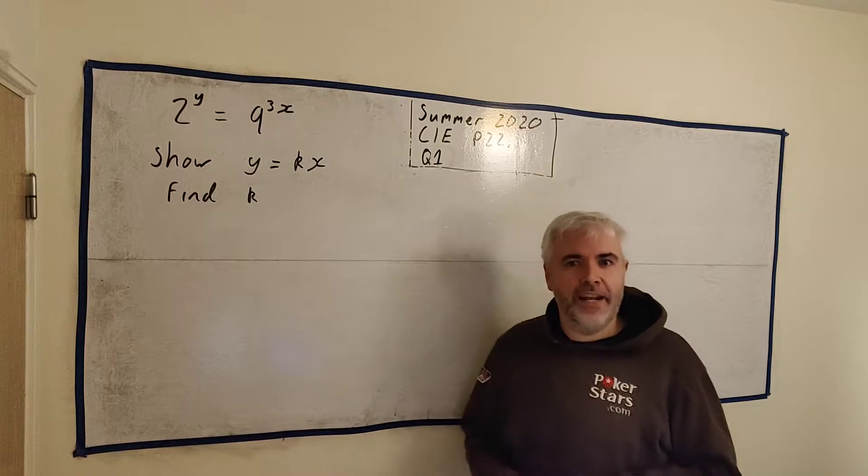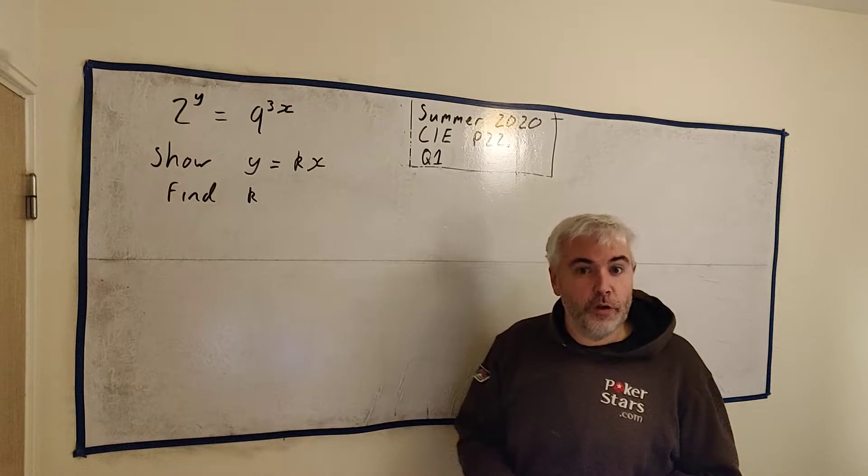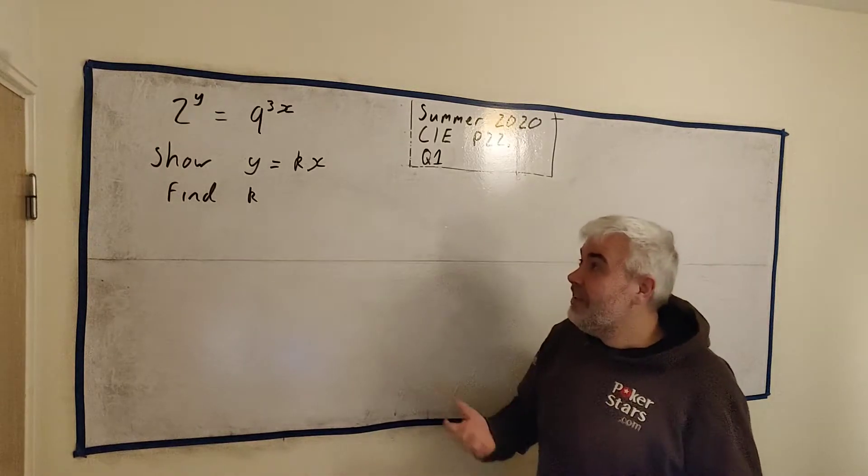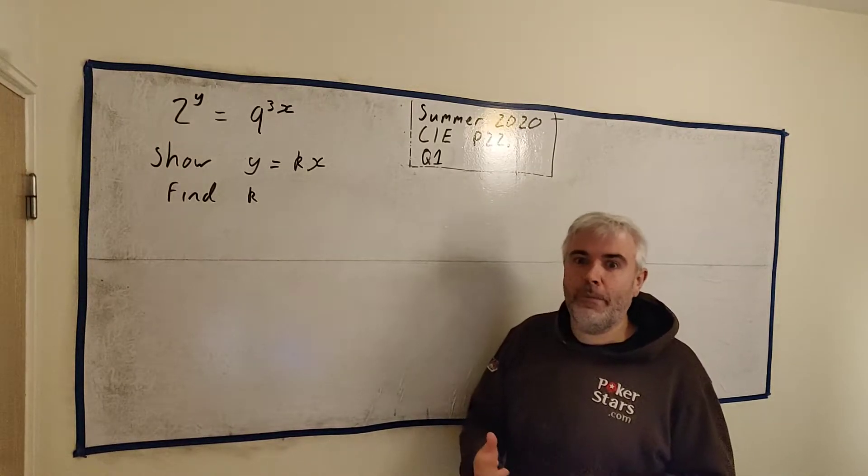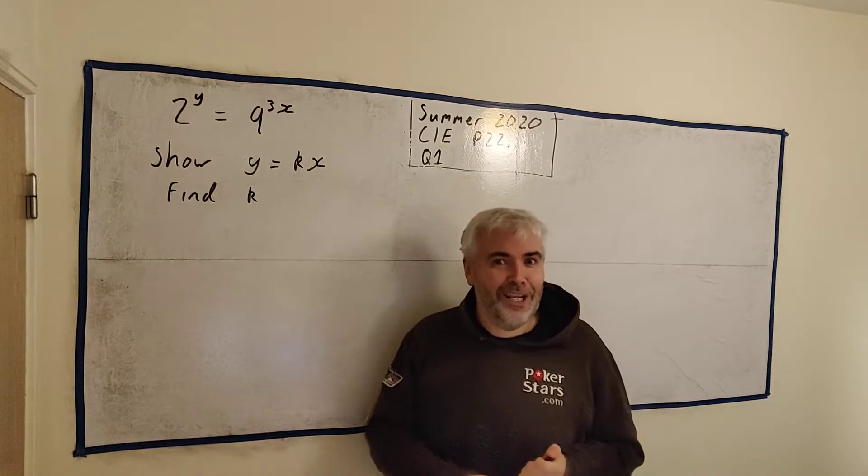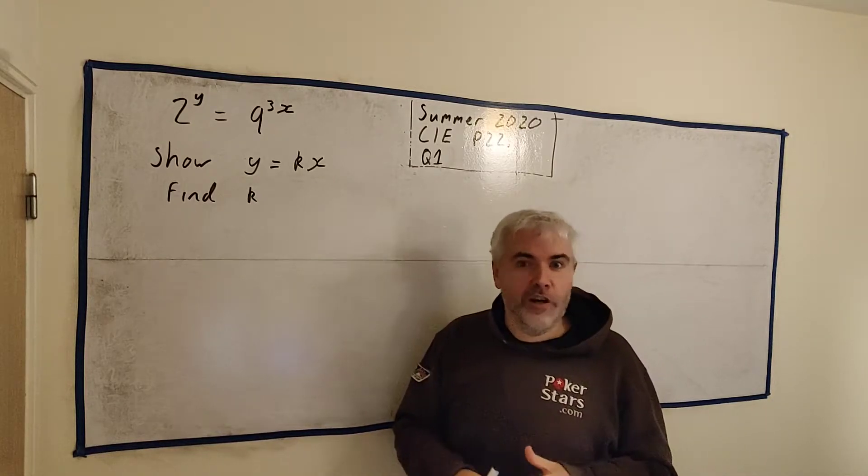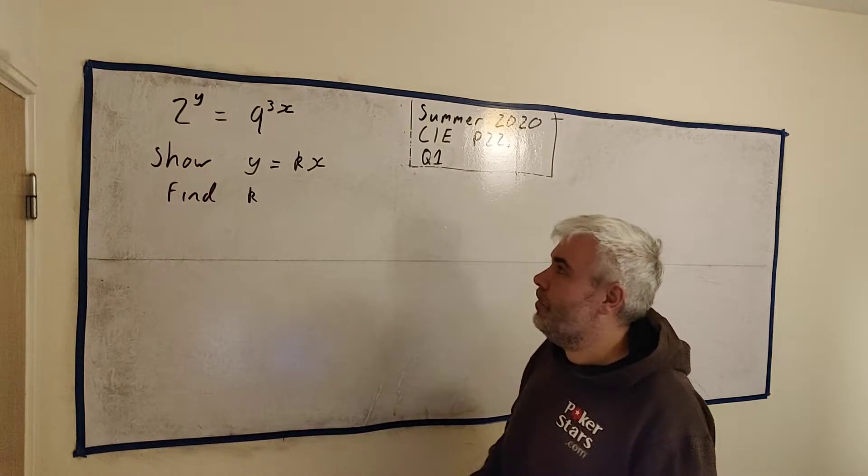Usually the first question in an exam is quite easy and while this question is easy if you know how to do it, it's quite short to do, students had a bit of trouble with it because it's logarithms and students are famously terrible at logarithms. One advantage you have in this question, the question told you to use logarithms so that's really the real trick to use.